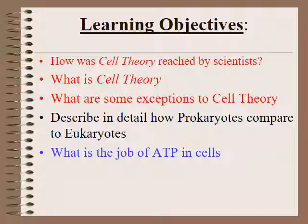The learning objectives for today: we're going to talk about how cell theory was reached by scientists, what cell theory is exactly, what are some exceptions to cell theory, and then we're going to talk about the two main types of cells — prokaryotes and eukaryotes, how they are similar and different, and finally the role of this little molecule called ATP inside of cells.